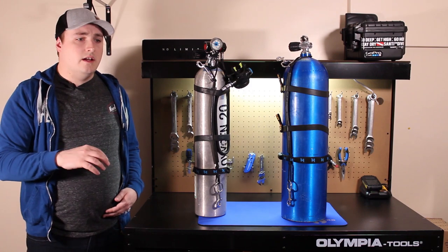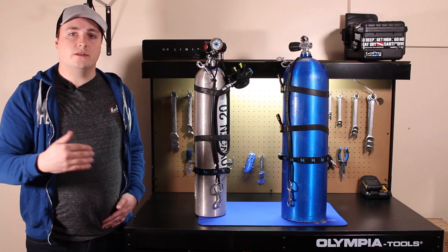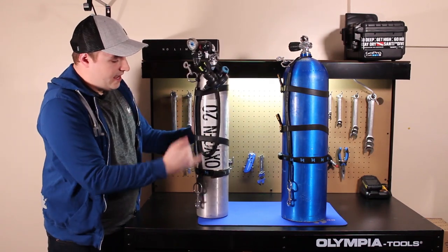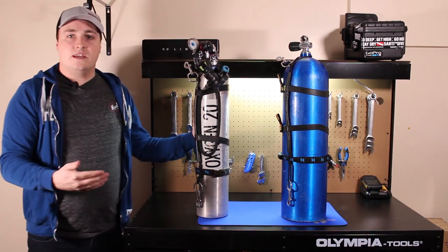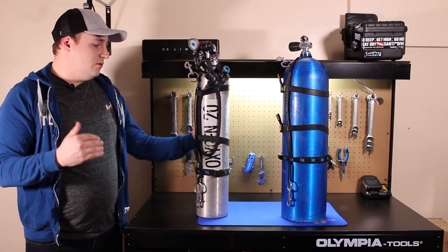A stage bottle is a bit different. A stage bottle is actually a stage of that specific dive. So it's going to be used as part of your dive plan. This here is an oxygen decompression bottle. So this is 100% oxygen. I use this for my final safety stop or my final decompression stop, usually between 10 and 20 feet.